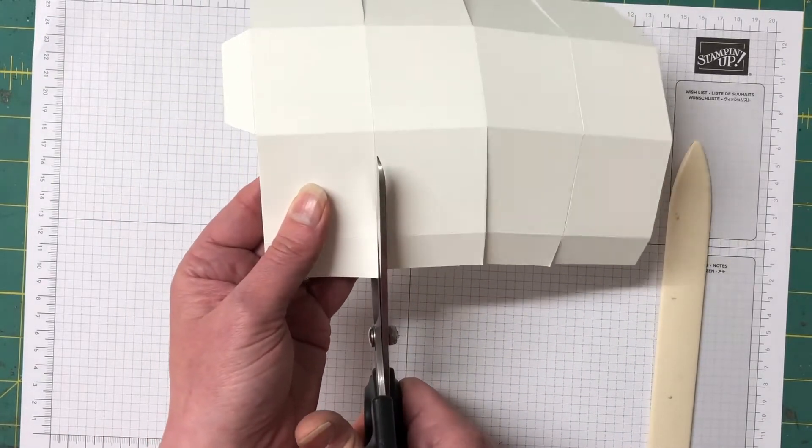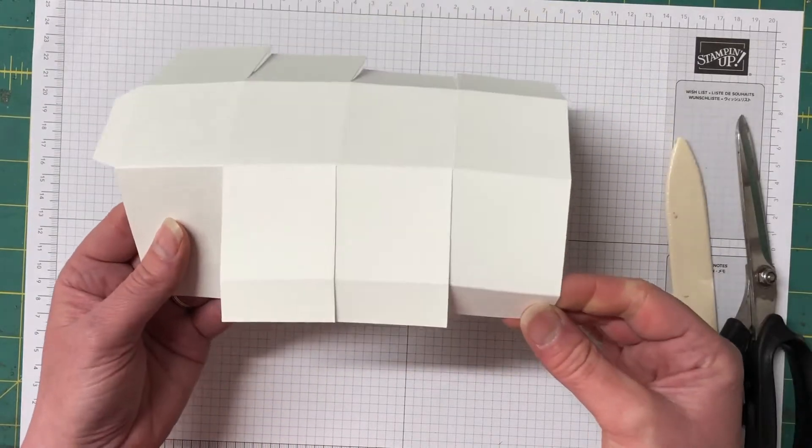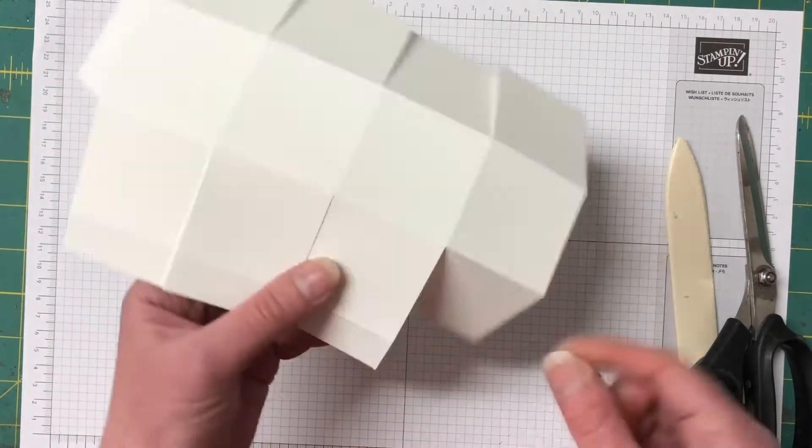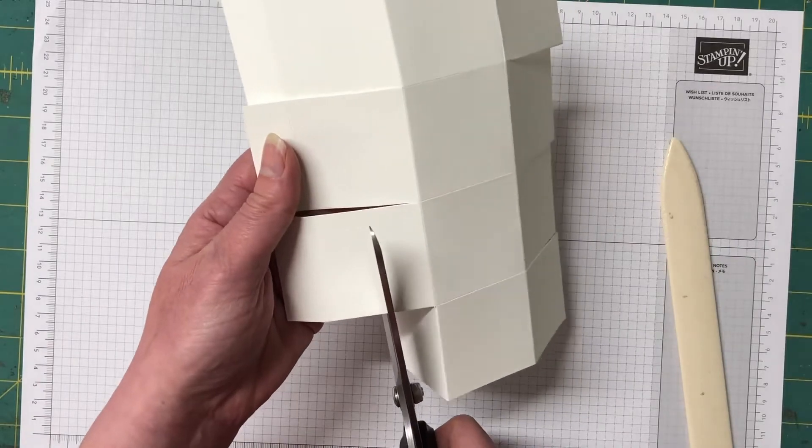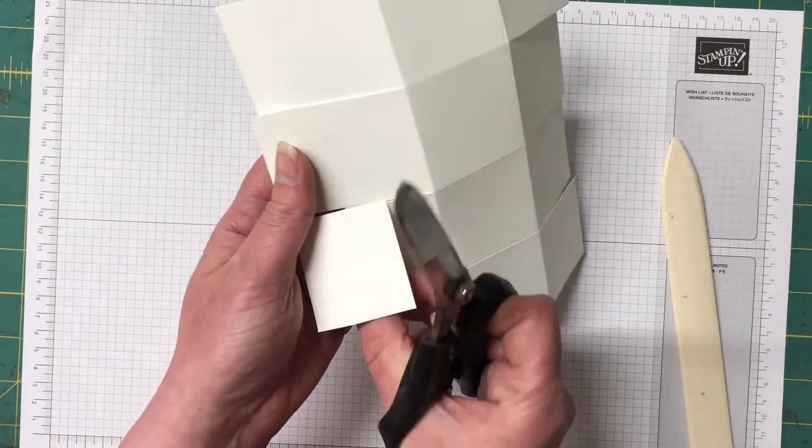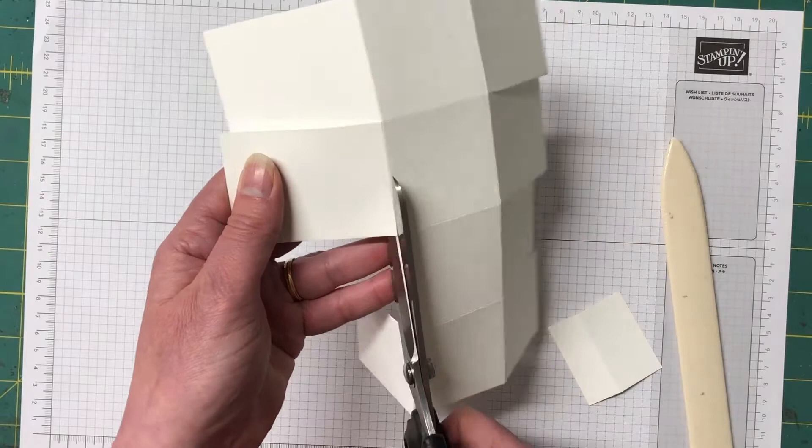That first cut that we made on the very right hand side that's going to be our closure of the box. So the second and the fourth one here we're going to just chop a little bit off. You can see that's going to be our little closure for the sides.